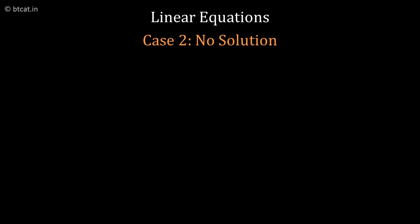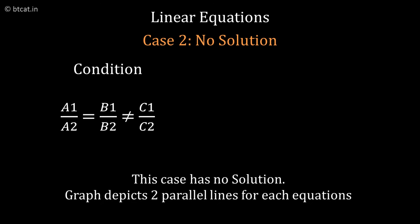The case is A1 upon A2 equals B1 upon B2 but not equal to C1 upon C2. The coefficients of x and y are in the same ratio, but the ratio is not the same as the ratio of the constants. This is a case of no solution. If you want to make a graph, you will get two lines which are parallel to each other, meaning there is no meeting point and therefore no solution.